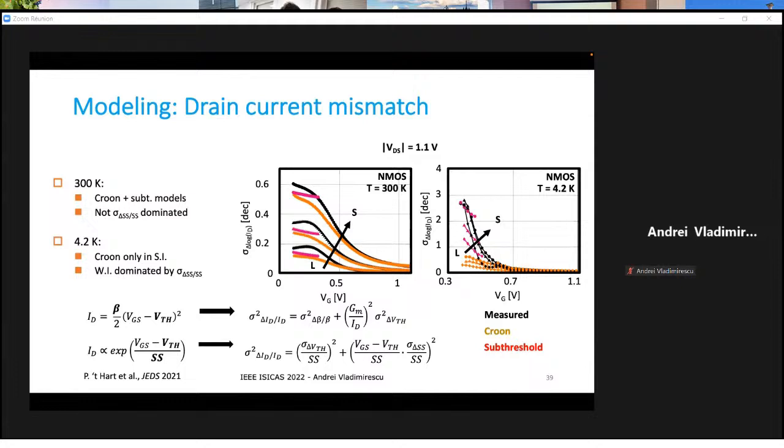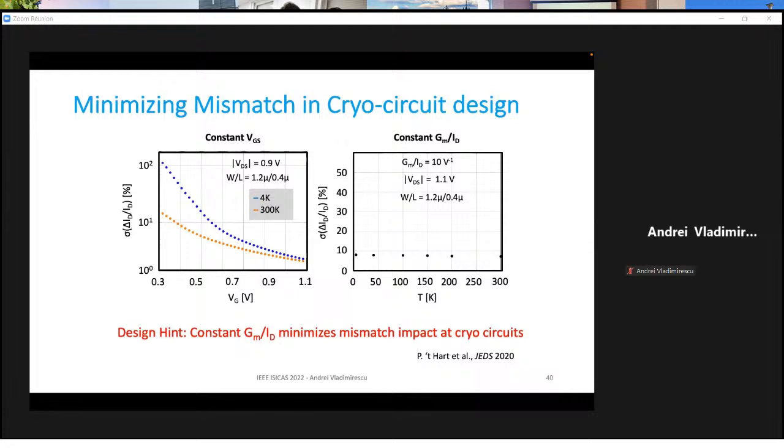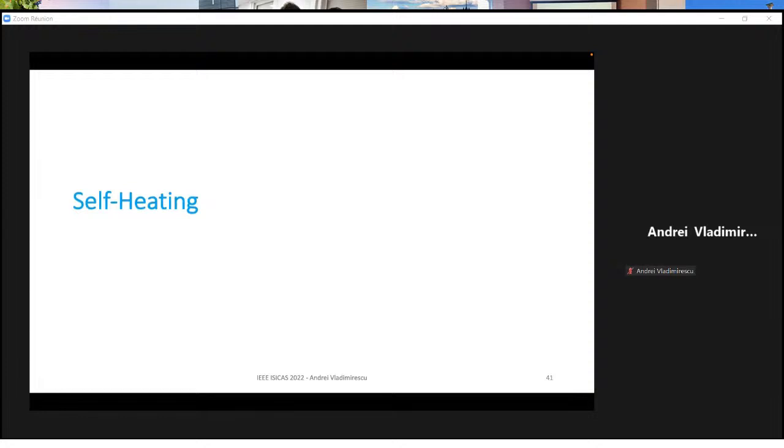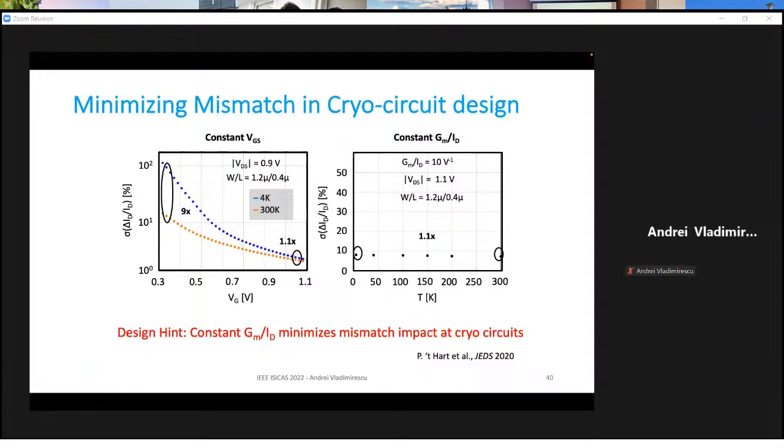Also what you notice here is that there is a huge jump between 300K and 200K. But then between 200K and going very low, there is little change. Now here is proof of the good match of the models with the measured variability and mismatch. And here is a very interesting issue. If we compare the increase of mismatch at the transistor at the same gate voltage, we can see that between high VG and going towards the threshold voltage, there is a 9-fold increase. We can see the mismatch at 4K to 300K. 300K in brown, 4K in blue. However, if we operate the device at constant gm over ID, we will see that the increase is very small in mismatch. So this is one way that one can design circuits.